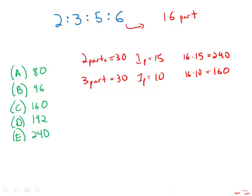Notice that we skipped 192, which immediately makes us a bit suspicious of that. If five parts equals 30, then one part equals six. And then all 16 parts, 16 times six is 96. That's a possible total.